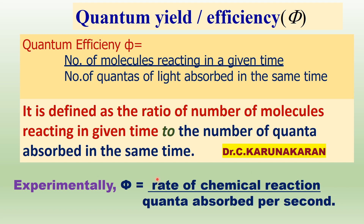The rate of reaction — by means of kinetics measurements — we can determine the rate of chemical reaction. By actinometer, we can find out how much light energy, how many photons are absorbed per second.